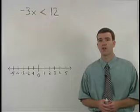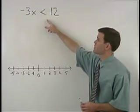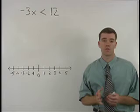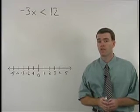When you're asked to solve an inequality like negative 3x is less than 12, your goal should be the same as it was when solving equations: to get x by itself on one side.